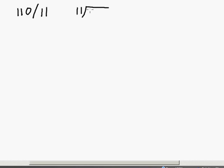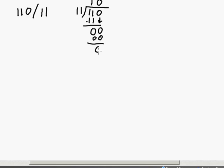The first example: 110 divided by 11. Let's write it in the long division form. 11 has two bits, so we look at the first two bits of 110. 11 goes into 11 one time. We do the multiplication: 1 times 11 gives us 11. We do the subtraction: 11 minus 11 is zero. Then we bring down the zero. How many times does 11 go into zero? It goes zero times, and we're left with a zero remainder.